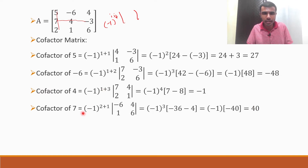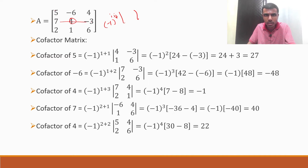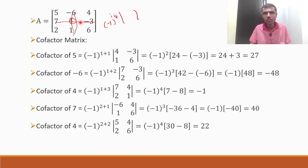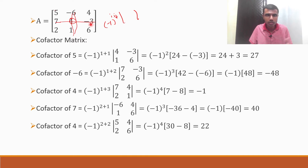Following the same method, cofactor of 4 at position (2,2): (-1)^(2+2) × det[5, 4; 2, 6]. Strike off the row and column in which this 4 is there — position is second row, second column — so you get det[5, 4; 2, 6] = 5×6 - 2×4 = 30 - 8 = 22. Cofactor of 4 is 22.